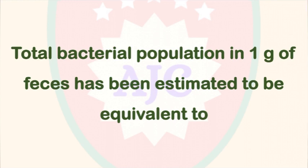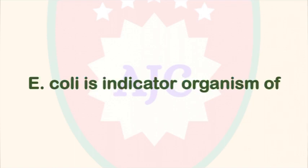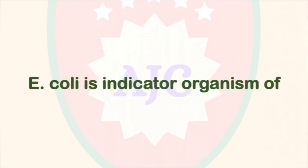The total bacterial population in 1 gram of human feces has been estimated to be 1.8 × 10¹⁸. E. coli is present and is a greater indicator organism than any other indicator organism used for bacteria in 1 gram of human feces.